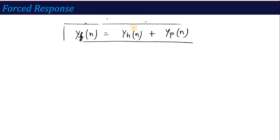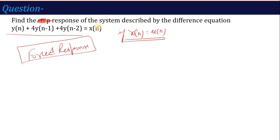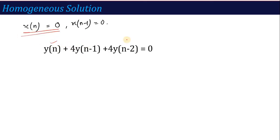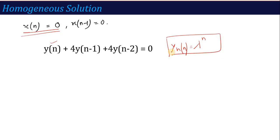The forced response is given by the homogeneous solution plus the particular solution. The homogeneous solution is found by setting the input to zero, making the difference equation y[n] + 4·y[n−1] + 4·y[n−2] = 0. The homogeneous solution is represented as y[n] = λⁿ.